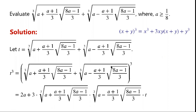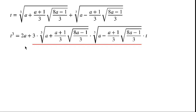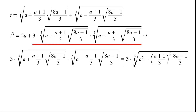So we have 2a. 3xy equals 3 times the first term times the second term. x plus y equals the first term plus the second term, which is t. So we write times t. Now we want to estimate the underlined parts of the second term, which is equal to 3 times the cube root of a squared minus a plus 1 over 3.